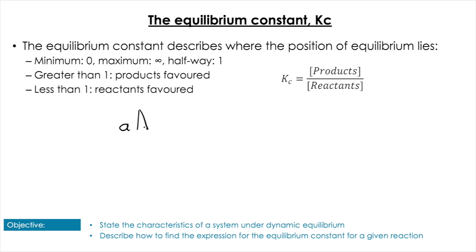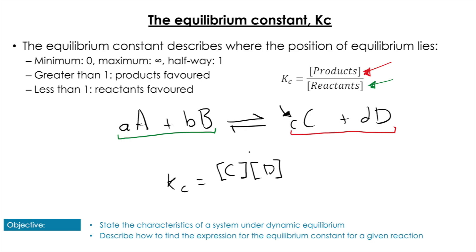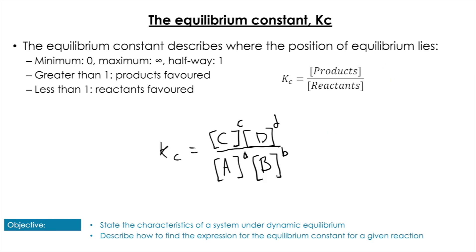Let's take a generalized example: aA + bB ⇌ cC + dD, where the capital letters are components and the lowercase letters are stoichiometric coefficients. For Kc, products over reactants gives us Kc = [C]^c × [D]^d divided by [A]^a × [B]^b. We raise each concentration to the power of its stoichiometric coefficient — unlike what we did back in the rate equations.